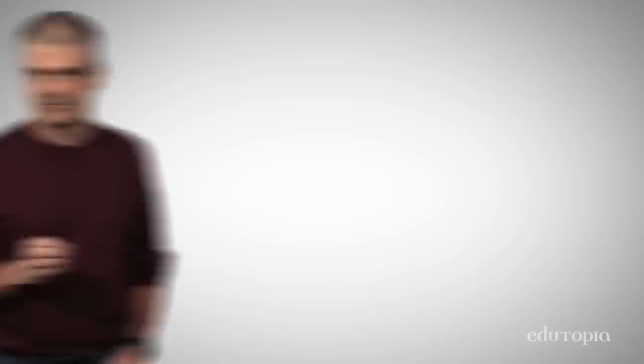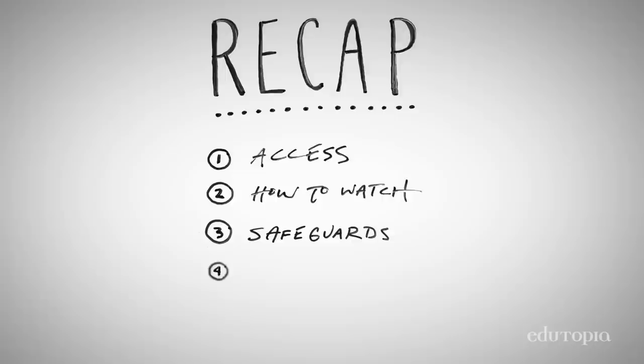So to recap, make sure all of your students have access to the content. Make sure to teach them how to watch the videos. Build in some safeguards to make sure that all students are actually watching the videos. Don't feel the need to make your videos perfect. And don't try to do too much all at once. Take it step by step. Take it slow. And before long, you will have flipped your class.